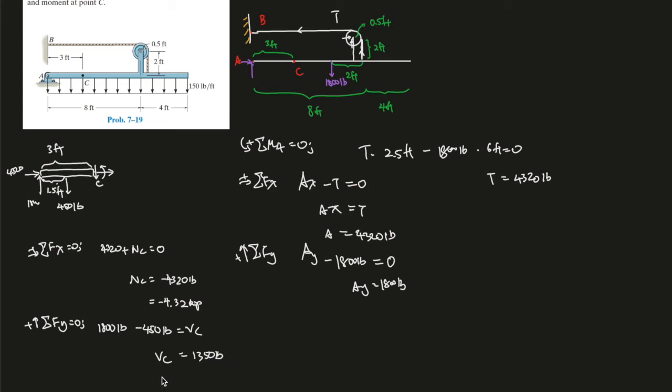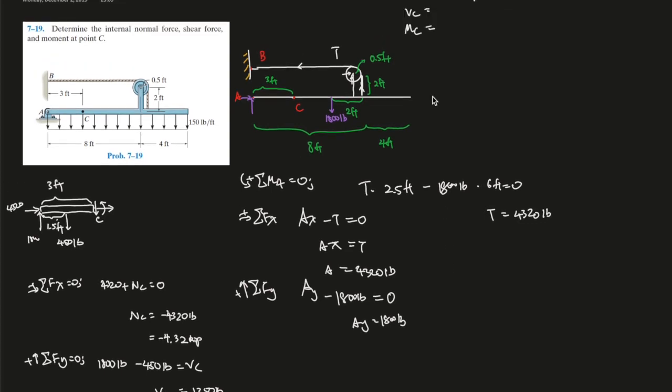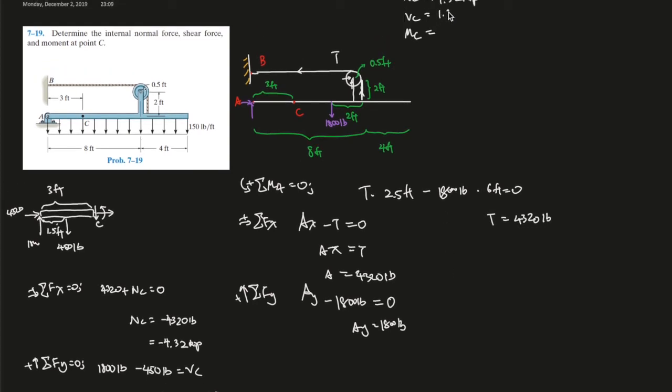Round that to 3 sig figs, that would be 1.35 kip. So Vc equals 1.35 kip over here.